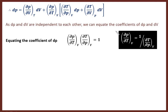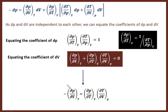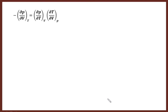Now equate the coefficient of dV. On the left side there is no dV, so the coefficient is 0. On the right side we have (∂P/∂V)_T plus (∂P/∂T)_v times (∂T/∂V)_p. Rearranging, we get (∂P/∂V)_T equals minus (∂P/∂T)_v times (∂T/∂V)_p. This is the final expression obtained by comparing the coefficient of dV.